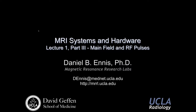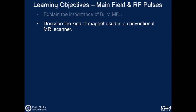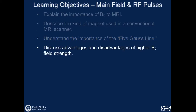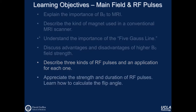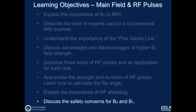At the end of this module, you should be able to reach the following learning objectives: to explain the importance of B0 to MRI; to describe the kind of magnet used in a conventional MRI scanner; to understand the importance of the 5 Gauss line; to discuss advantages and disadvantages of higher B0 field strength; to describe three kinds of RF pulses and an application for each; to calculate the flip angle; to explain the importance of RF shielding; and to discuss safety concerns for both B0 and B1.